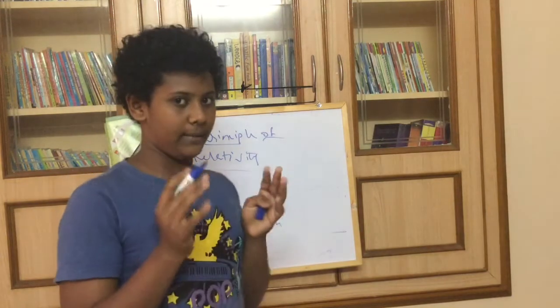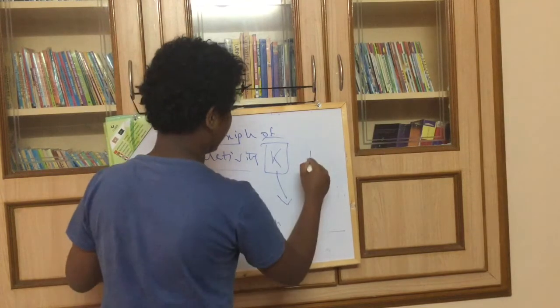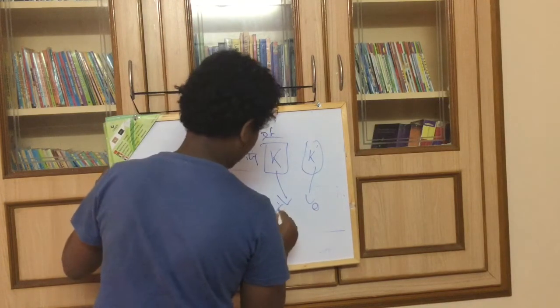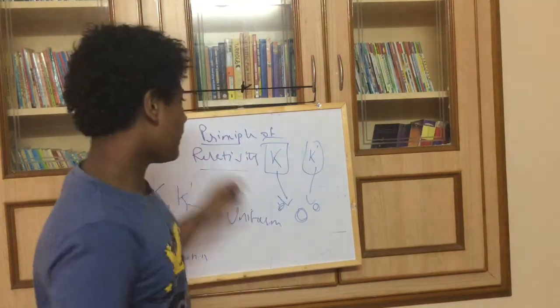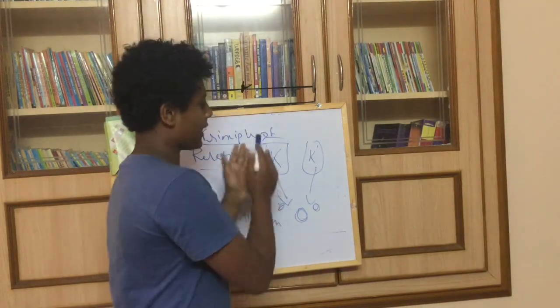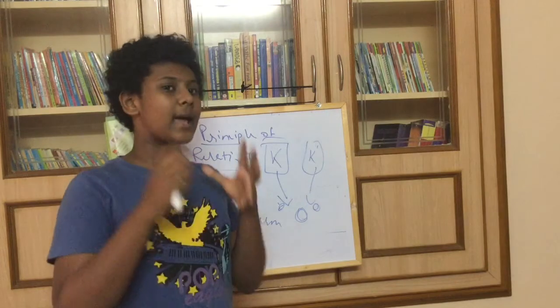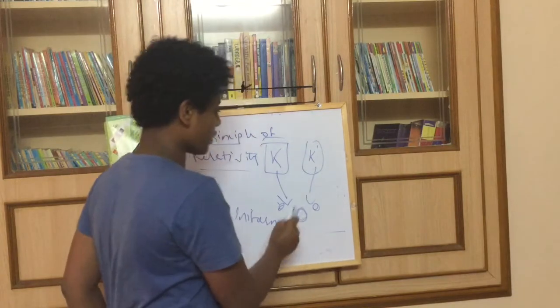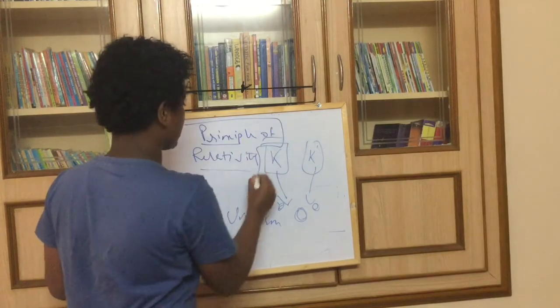So if these two coordinate systems are in motion, when you look at an event from K and an event from K dash, K dash might see the event here and K might see the event here but the original event is happening over here. According to the principle of relativity, any event happening in space is relative to the observer's point of view. The observer or the reference body is the coordinate system. According to that law, in the principle of relativity in the restricted sense, even though it's relative to the observer's point of view, the original position of the body doesn't change.